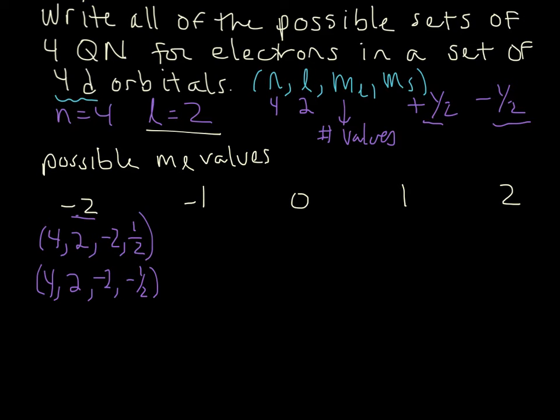So let's go ahead and do the next set for negative 1. So again, nothing changes here, n is still 4, l is still 2 because it's a 4d orbital. But now we're going to put in negative 1 for our m sub l, and let's go ahead and do positive one half first. And then do the same thing here, so negative 1 and negative one half.